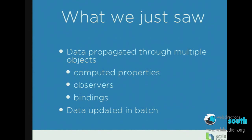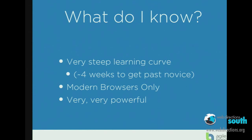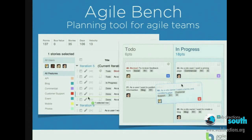So what did we just see? We saw data move around via computed properties, observers, and bindings, with stuff getting updated in batch. I know that this is freaking hard — I ran a commercial team of about five people building a front-end website, and it took us about four weeks to get past novice. It is an extraordinarily steep learning curve. It really only works in modern browsers. But it's very, very powerful. My name's Mark, this is my product Agile Bench — thank you all very much.